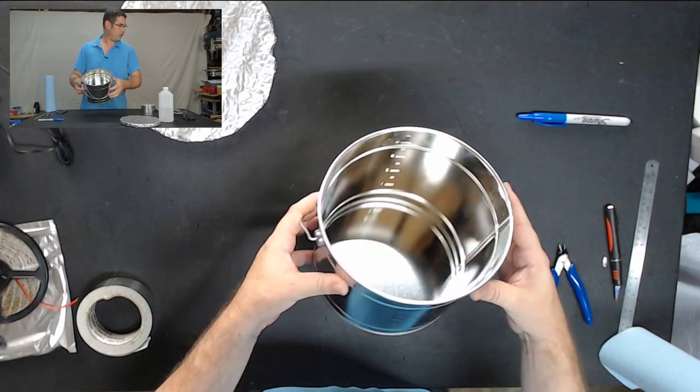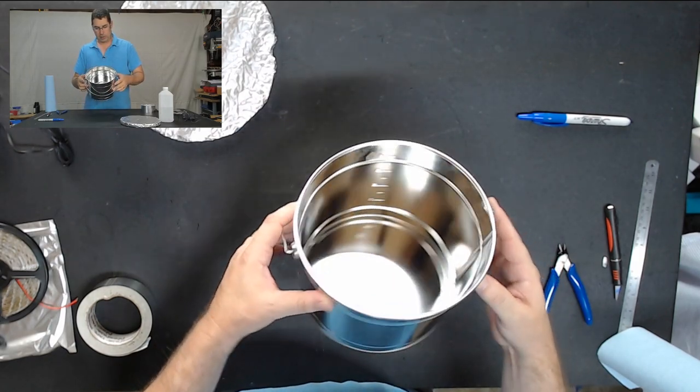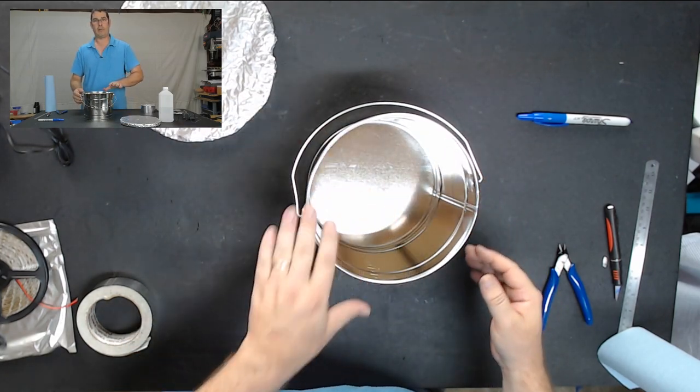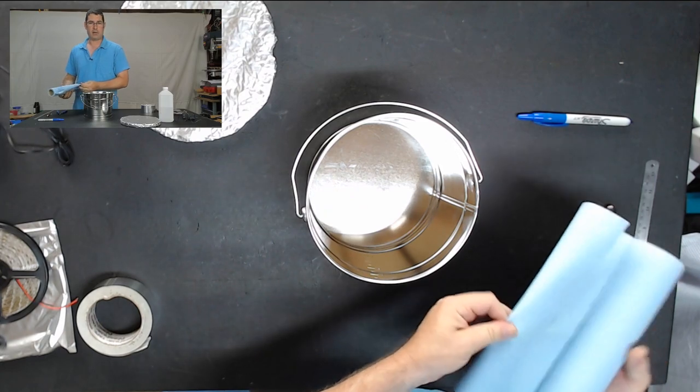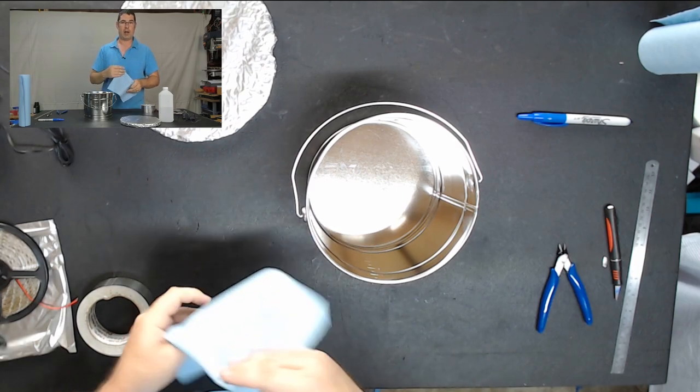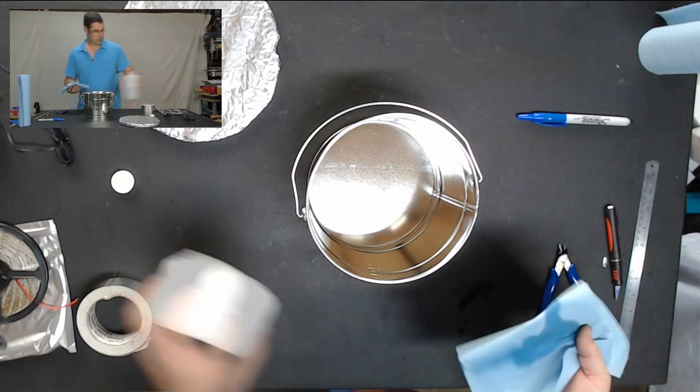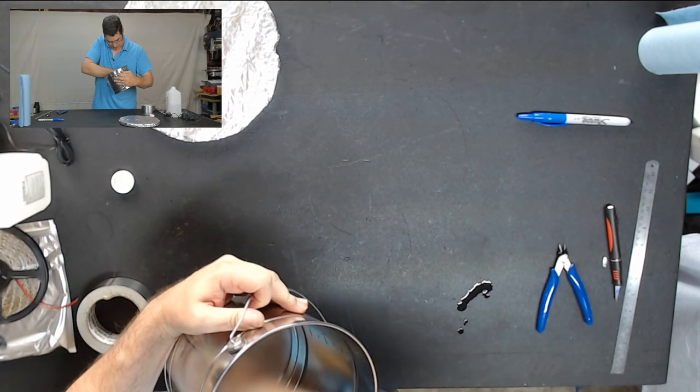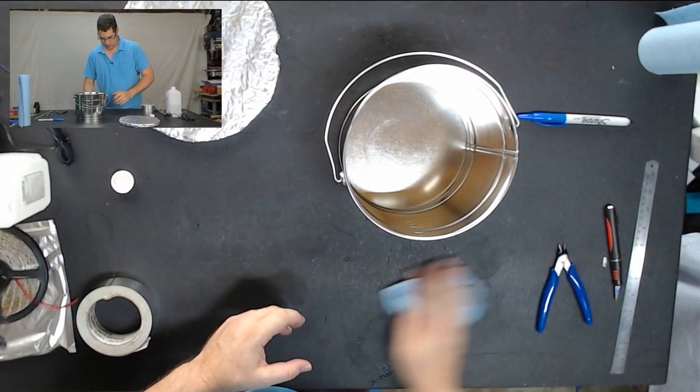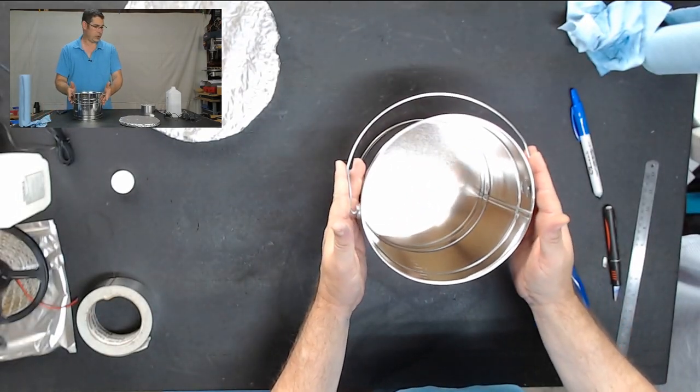If you can see, probably not in the camera, but there are fingerprints and human hand prints and everything from the store all over the inside of this bucket. So the first thing I'm going to do is take some IPA, some isopropyl alcohol and a paper towel and just wipe it out to get the grease from the human hands off of it. Okay, that should dry pretty quick there.